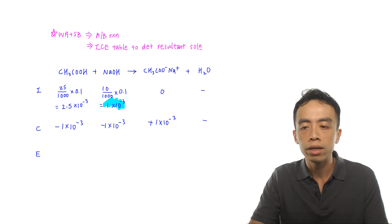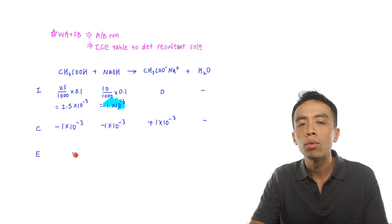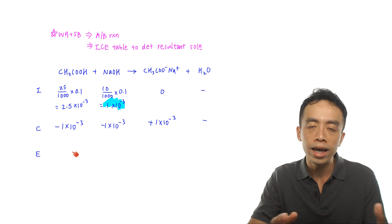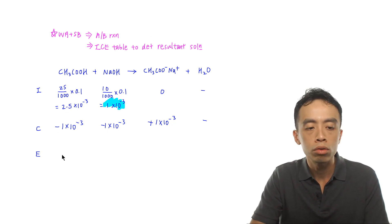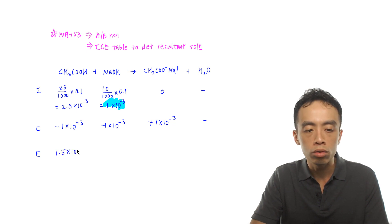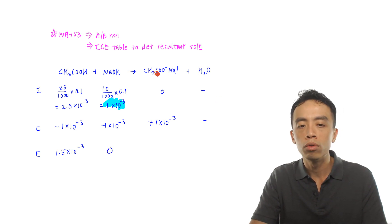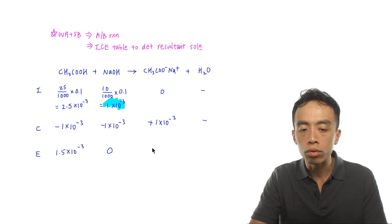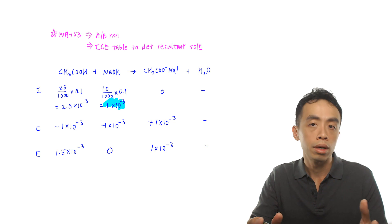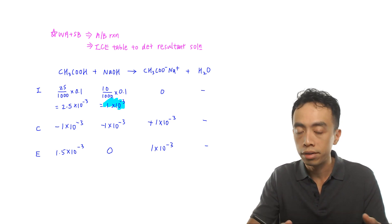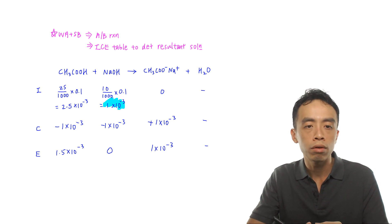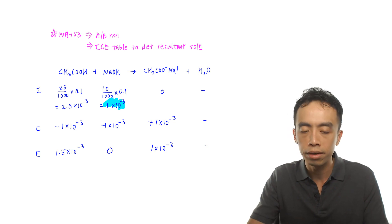The end row is just initial plus the change. CH₃COOH remaining = 2.5 × 10⁻³ − 1 × 10⁻³ = 1.5 × 10⁻³ mol. NaOH = 0 mol (fully consumed as limiting reagent). Product CH₃COO⁻Na⁺ = 1 × 10⁻³ mol. This is the resultant solution, determined very concisely using the ICE table.